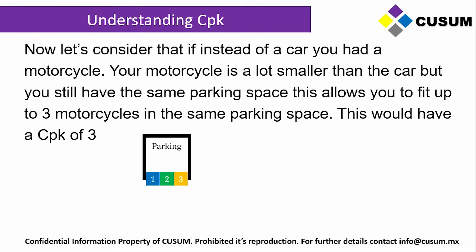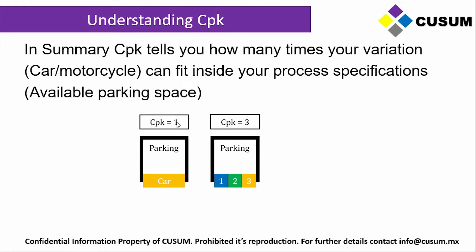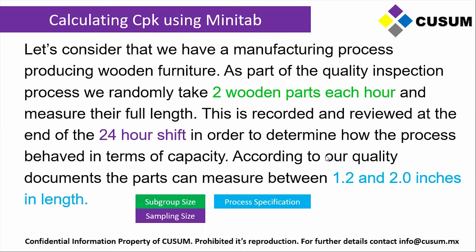I'm talking big as in spread out — as in sometimes you're getting 5 inches and then all of a sudden you're getting 15 inches. That's going to be really hard to put into spec when compared to a process that is more stable around 4 to 5 inches. Your car fitting only once inside the parking lot is CPK equal to 1, and 3 motorcycles fitting inside a parking lot gives you a CPK of 3.